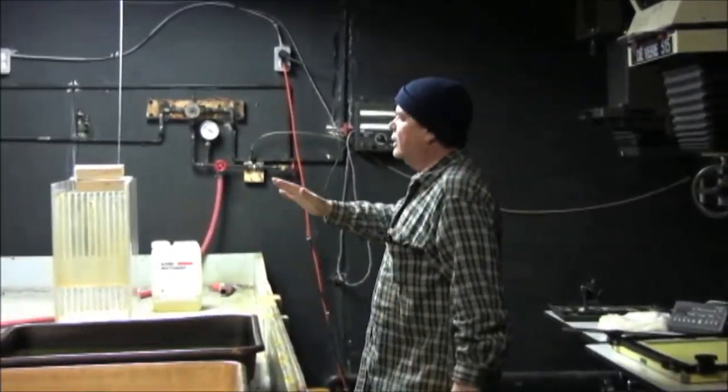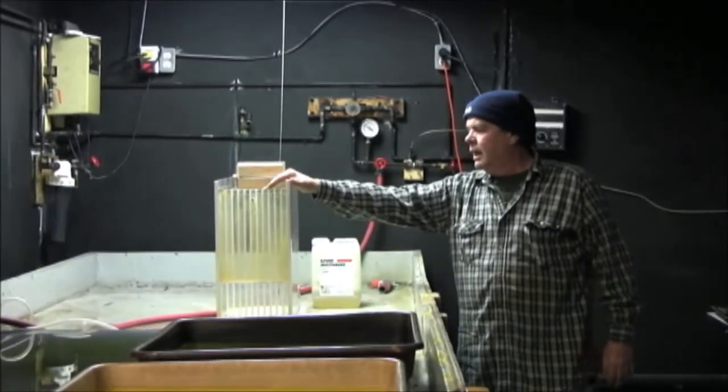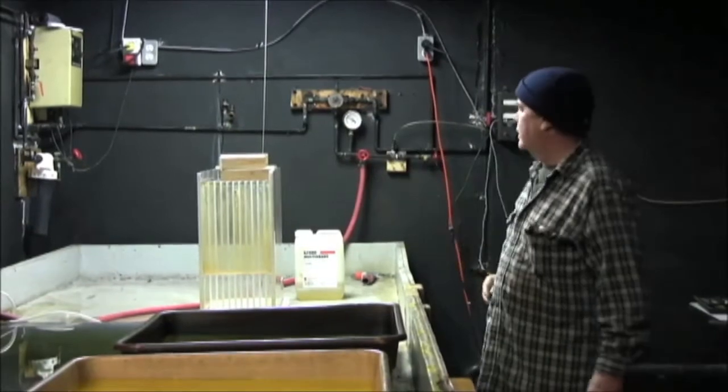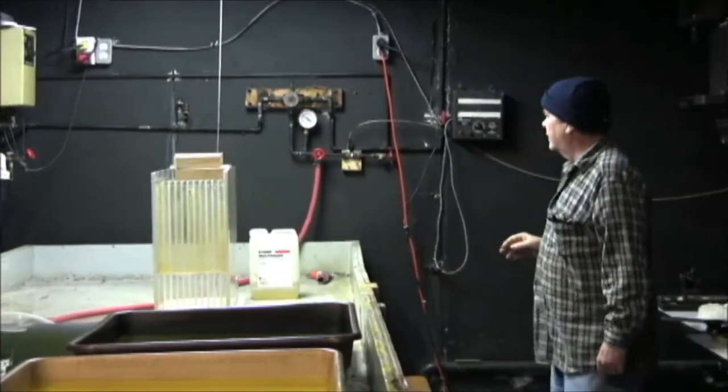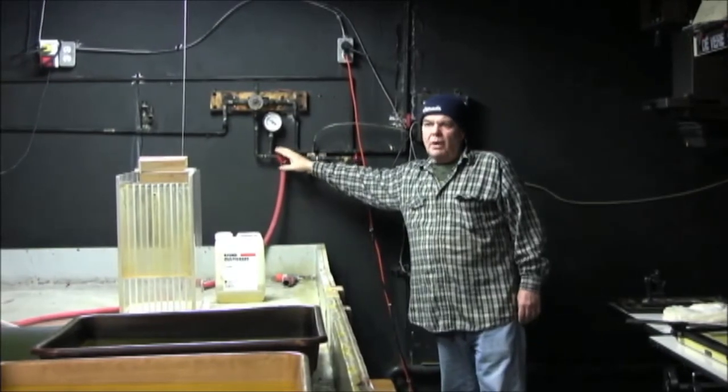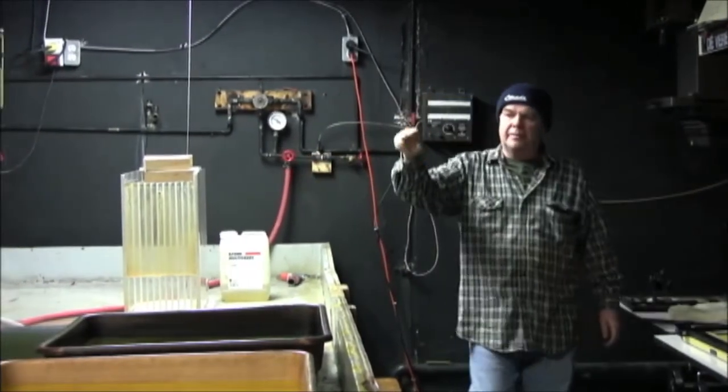You'll see we have the second archival washer here. This is a 16x20, that's a 20x24. So I have two setups for water. I have one coming from one end of the building and another coming from another end so that I have good pressure here all the time.